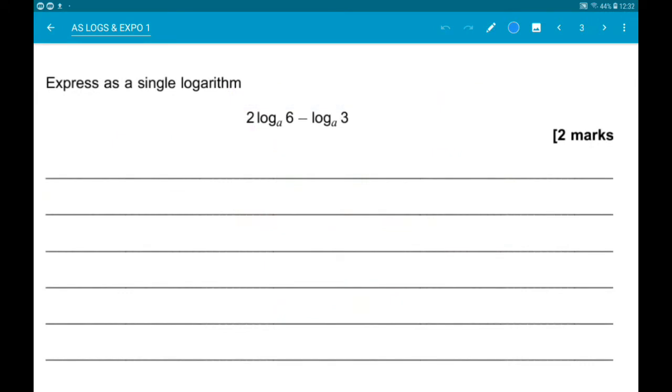So to combine the logarithms, they both need to be singular. So we need to write 2 log base a of 6 as log base a of 6 squared. So that's log base a of 36.